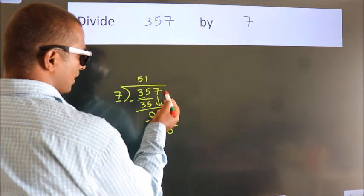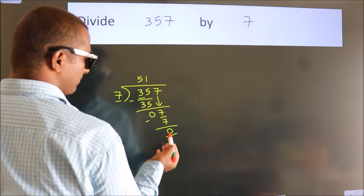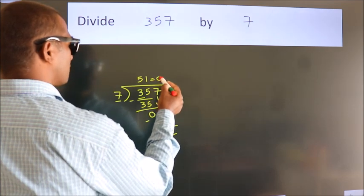After this, no more numbers to bring down. And we got remainder 0. So this is our quotient.